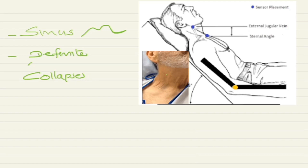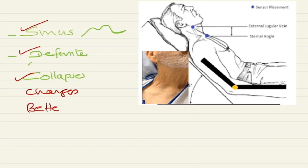So what are the major differences? One: it is sinuous in nature. Two: definite upper level. Three: it collapses inwards. Four: it changes with respiration and other manoeuvres. Another important point to remember is that JVP is better seen than felt. And it can be obliterated, because the pressure changes are occurring from the right atrium — so if you press over the root of the neck, the JVP can be obliterated. These are the major points to differentiate arterial pulsations from venous pulsations.